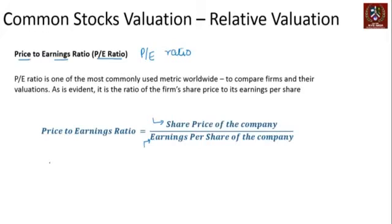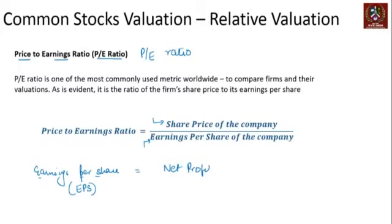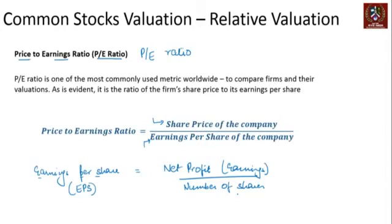The share price is whatever price each share of the company is trading at. Earnings per share, also known as EPS, is the total net profit of the company — also known as earnings — divided by the number of shares. In other words, if you are holding one share of the company, EPS tells you what your entitlement of earnings is for that one share.